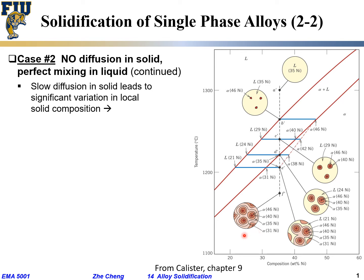So what we get is called coring — core, like the center core. The solid forms layer by layer from center outward, giving a gradual change in composition. Typically this is not what you want for engineering applications, because customers want uniform, predictable mechanical properties. With this local composition change, properties will vary from location to location depending on which slice the customer received. This coring is often detrimental.